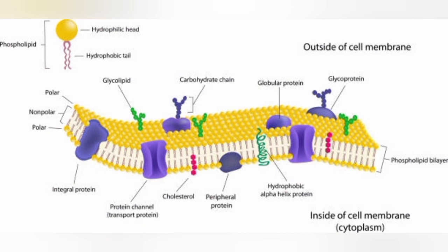Glycoproteins and glycolipids: Carbohydrate chains attached to proteins (glycoproteins) or lipids (glycolipids) are present on the exterior surface of the plasma membrane. These molecules are involved in cell recognition, cell-to-cell communication, and the immune response.